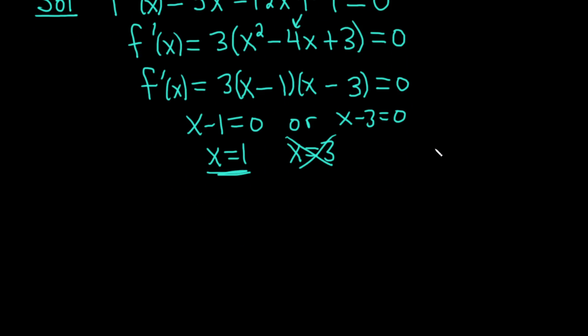The biggest number we get is the absolute maximum on this closed interval, and the smallest is the absolute minimum. Let me write down the function again: f(x) = x³ - 6x² + 9x + 8 on [-1, 2].